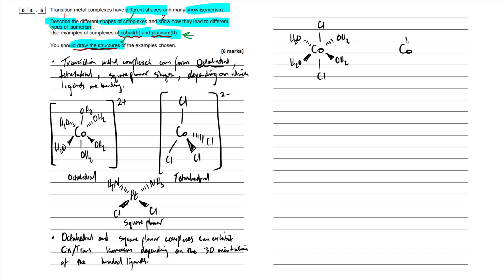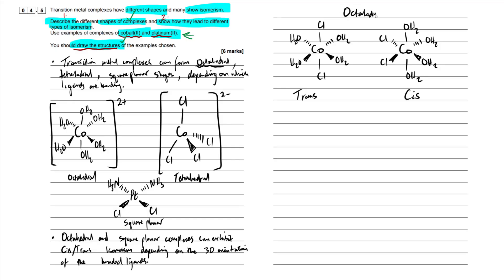Drawing the cis-trans isomers for our octahedral cobalt complex: I'll use four water molecules and two chloride ions. In the trans isomer, the two chloride ions are on opposite sides of the complex. In the cis isomer, they're on the same side — even if one is going away from us and one towards us, they're still on the same side in terms of 3D orientation. Note there's no overall charge here since cobalt 2+ and two chloride ions neutralise each other. Label them as trans and cis, octahedral.